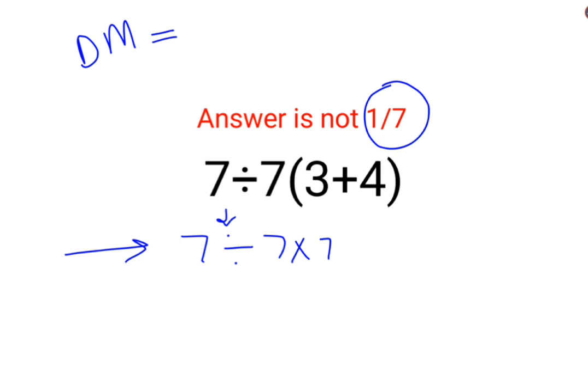Whatever operation happens first on your left-hand side has to be done first. So 7 divided by 7 is 1, multiplied by 7. The answer for this question is just 7.